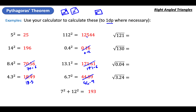Next we do 7 squared which is 49, and 12 squared which is 144. Add those to get 193. Square root of 121 is 11, because 11 times 11 is 121. Square root of 130 is 11.4 to one decimal place. Square root of 0.04 is 0.2 — weird, this number's tiny but the square root is bigger. 0.2 times itself is an even smaller number. Square root of 3.24 is 1.8.